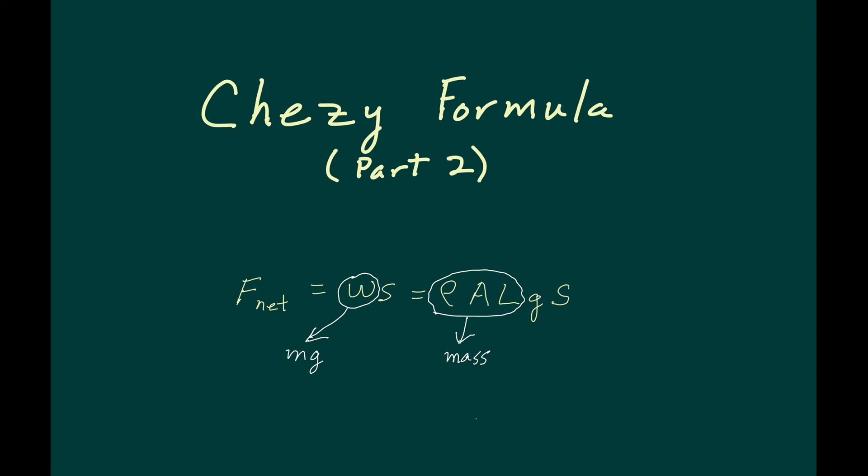This is part two of the Chezy formula derivation. I finished part one with F sub net equals weight times slope, of course weight is mass times the acceleration of gravity.